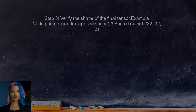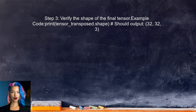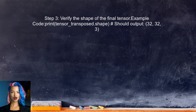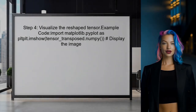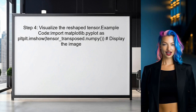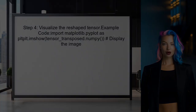After transposing, the user should verify the shape of the final tensor. This ensures that the tensor is now in the correct format for further processing or visualization. Finally, the user can visualize the reshaped and transposed tensor to confirm that the images appear correctly. This can be done using a library like Matplotlib.